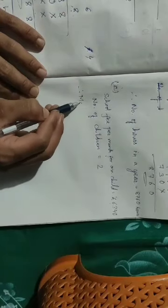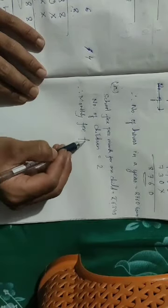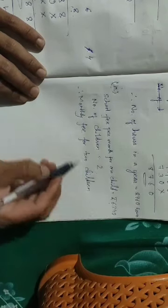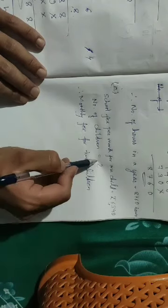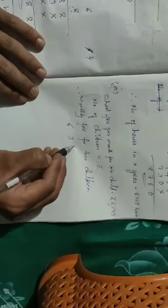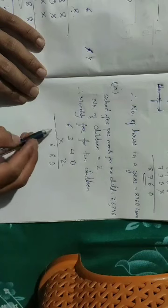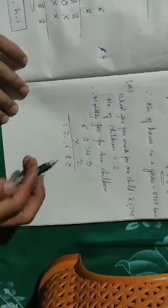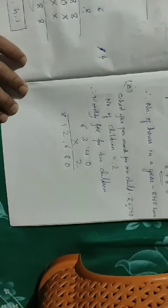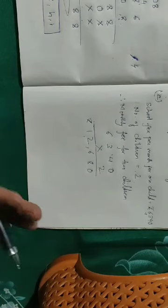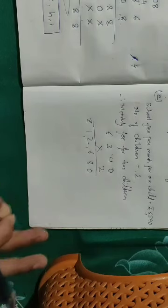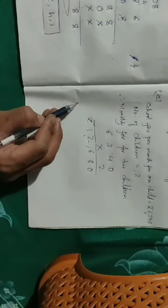The number of children is two. So the monthly fee for two children — we multiply 6,340 by 2. 2 times 0 is 0, 2 times 4 is 8, 2 times 3 is 6, 2 times 6 is 12. So he pays rupees 12,680 for two children in one month. Now we have to find how much he pays in an entire year. Since there are 12 months in a year, we multiply 12,680 by 12.